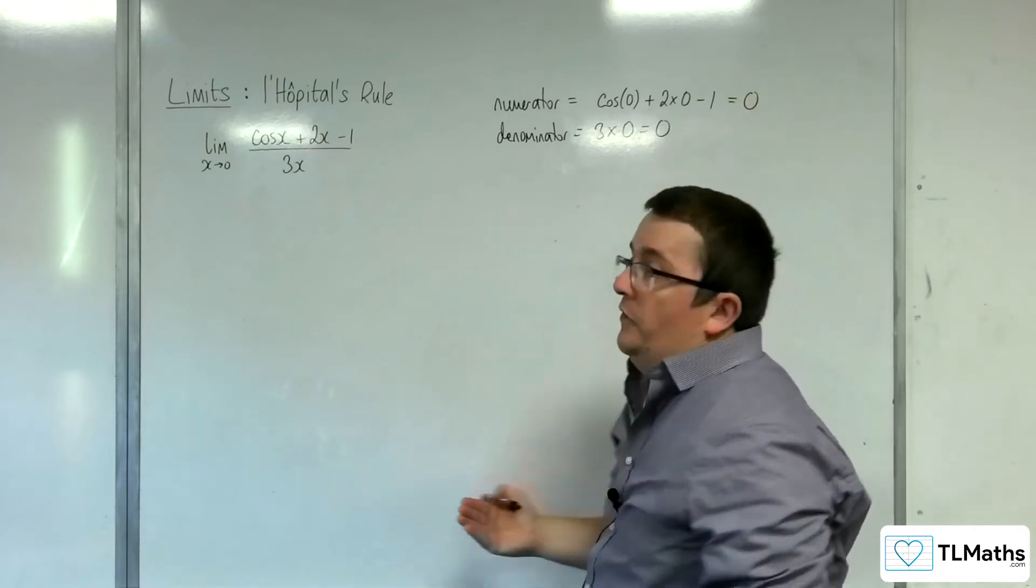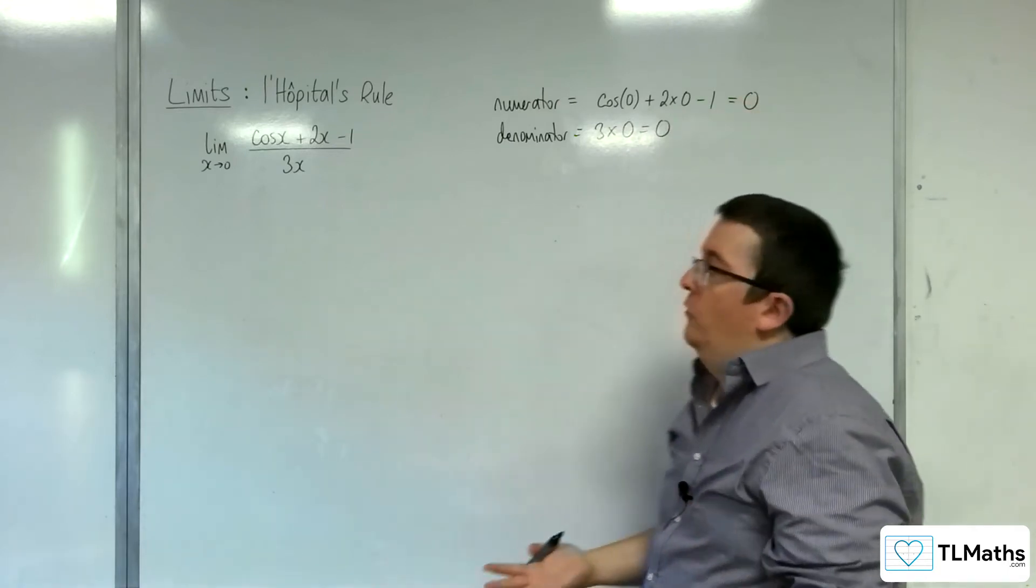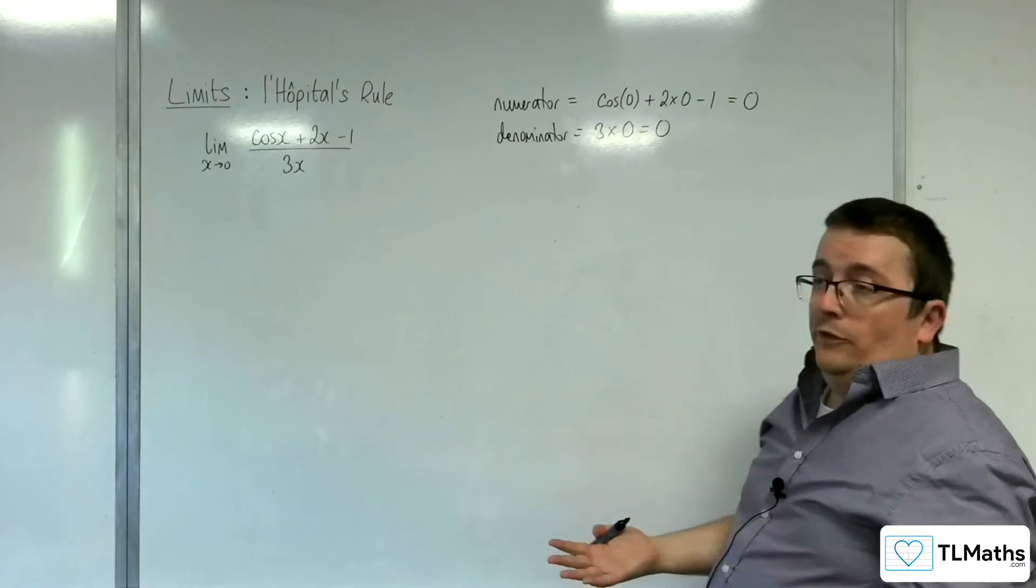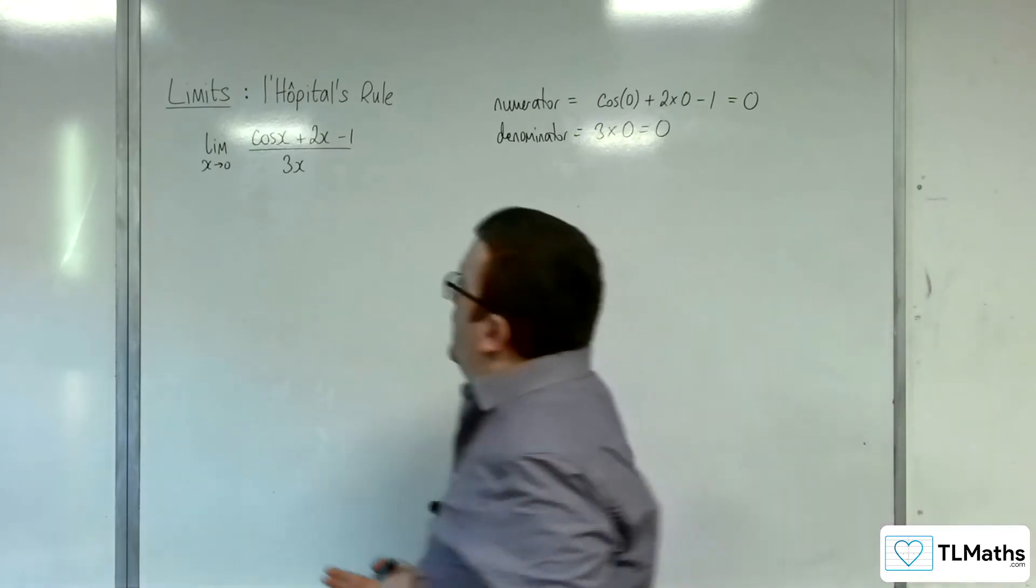So we have 0 divided by 0, so it is of indeterminate form. So that allows us to use L'Hopital's rule in order to find the limit.